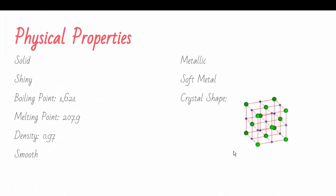Physical properties. Sodium is a solid at room temperature. Since sodium is a metal, it's shiny. And the boiling point is 1,621.